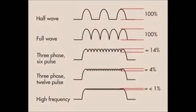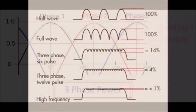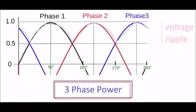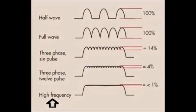X-rays produced when the voltage is near zero have little penetrability and have low diagnostic value. Three-phase power solves this issue by overlapping waves so that when one is losing voltage the other is peaking, meaning power never drops more than 14%. High-frequency generators attain less than 1% ripple and are used in mammography and CT.